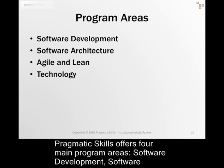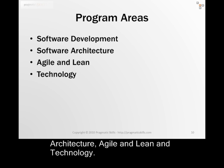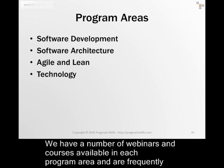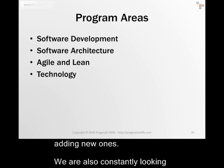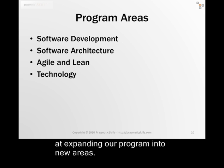Pragmatic Skills offers four main program areas: software development, software architecture, agile and lean, and technology. We have a number of webinars and courses available in each program area and are frequently adding new ones. We're also constantly looking at expanding our program into new areas as well.